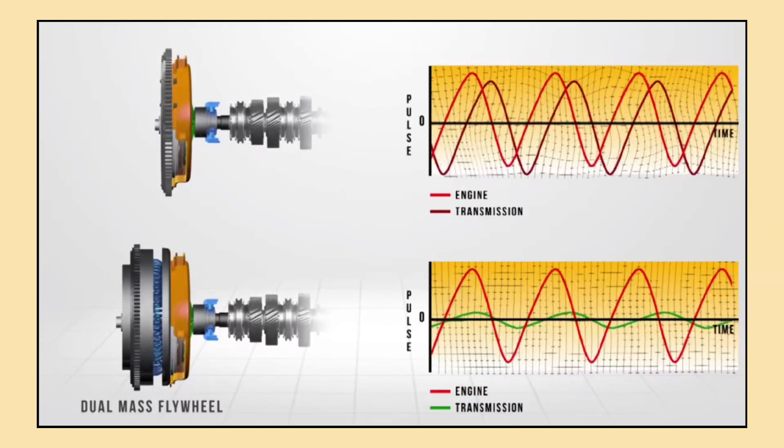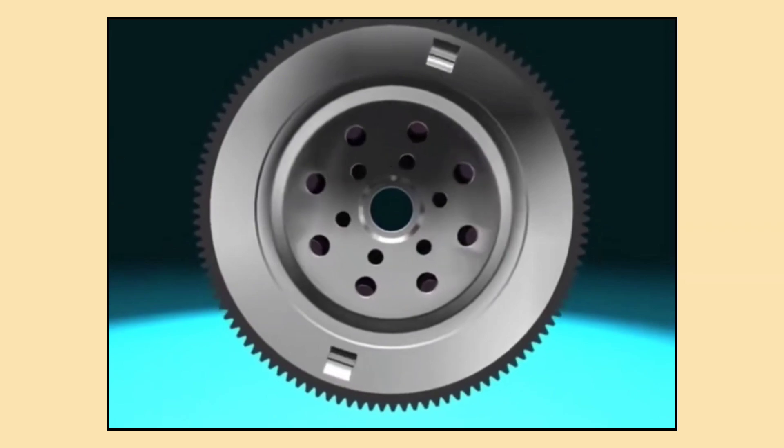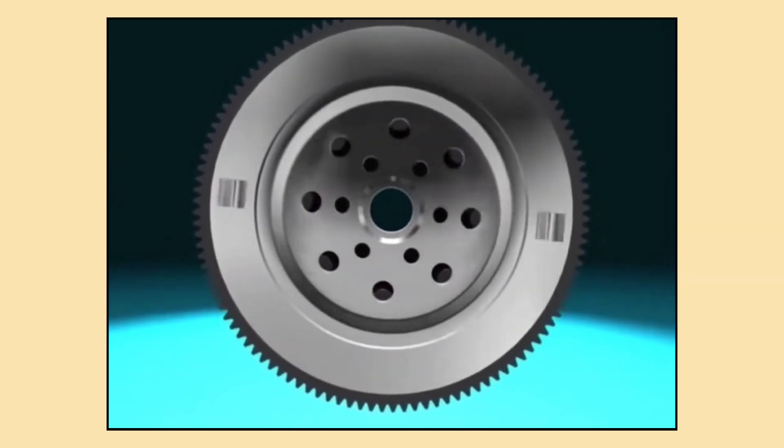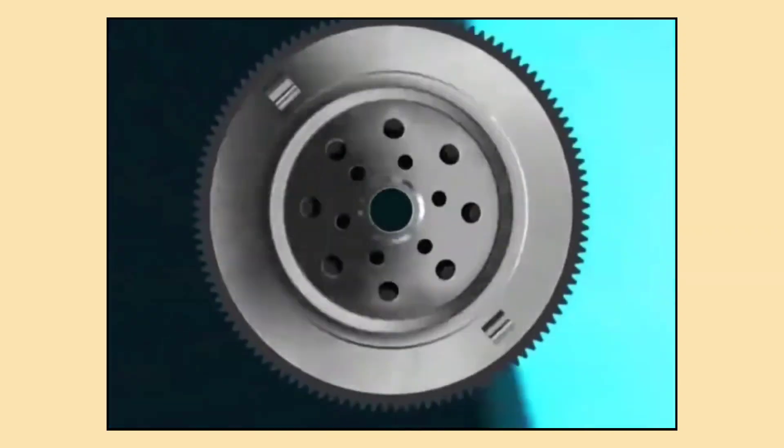The flywheel helps even out these bursts of power. It absorbs the energy created when the engine fires, storing it as rotational energy. It then releases this energy gradually when the engine needs it, helping to maintain a steady smooth rotation of the engine's parts.